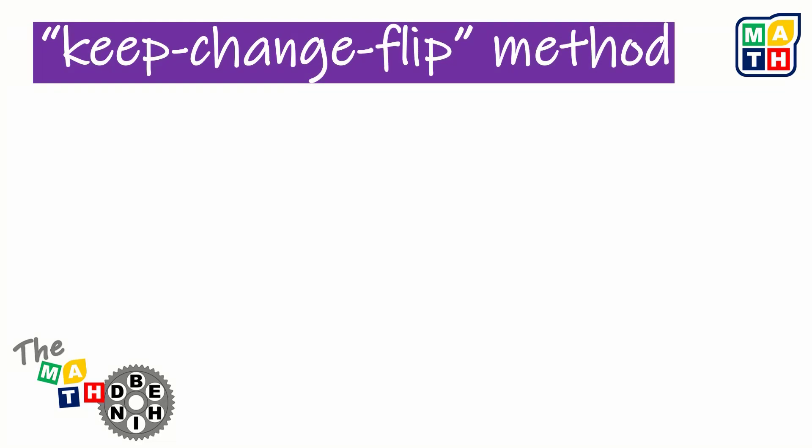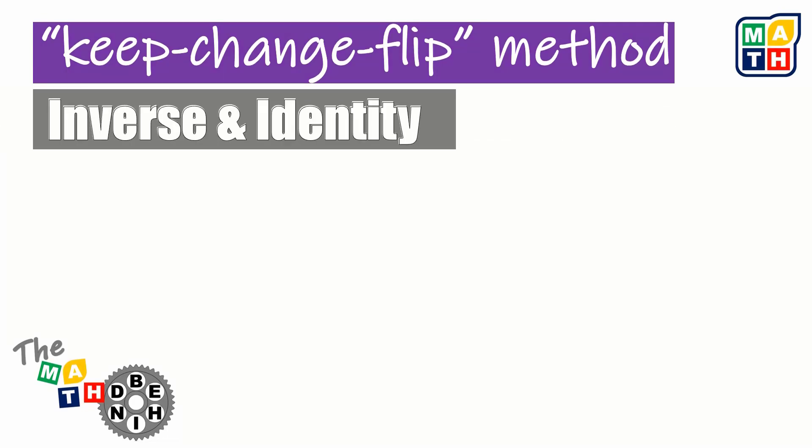The secret behind the keep change flip method is a combination of an inverse and an identity property for multiplication.